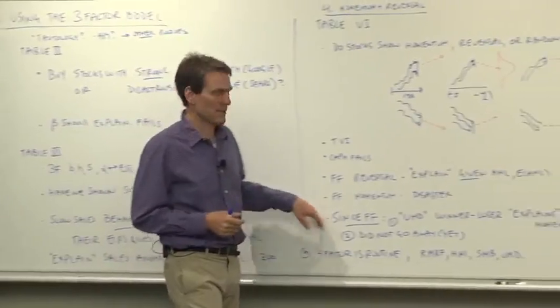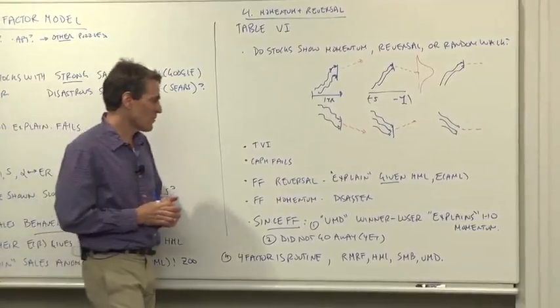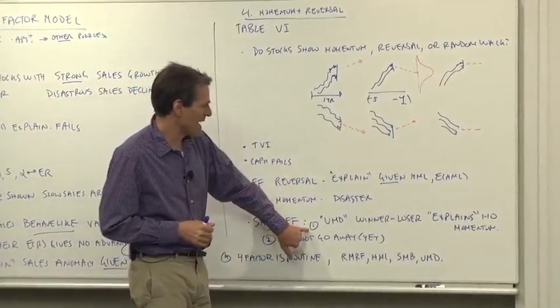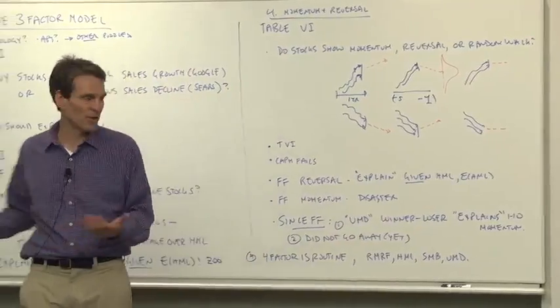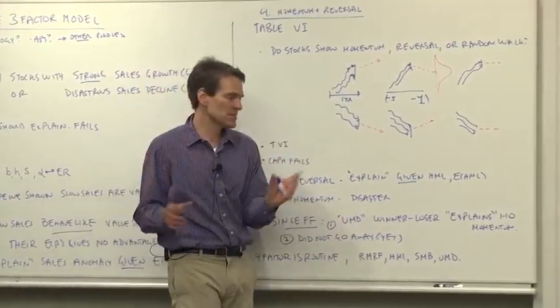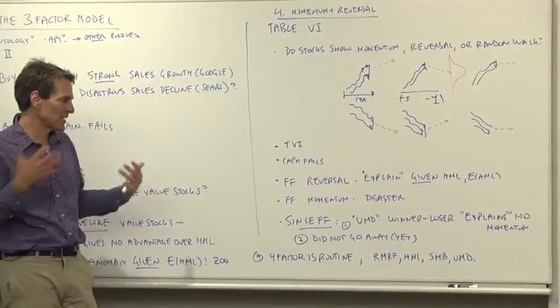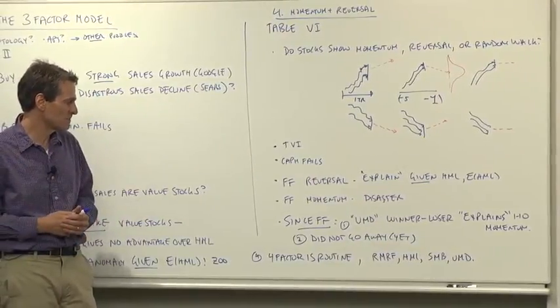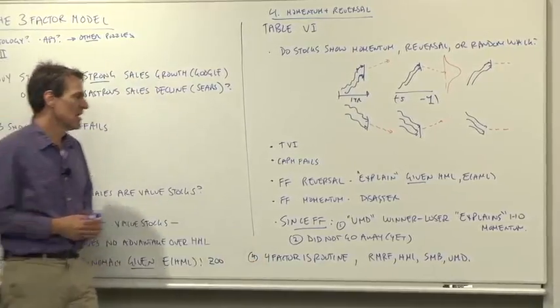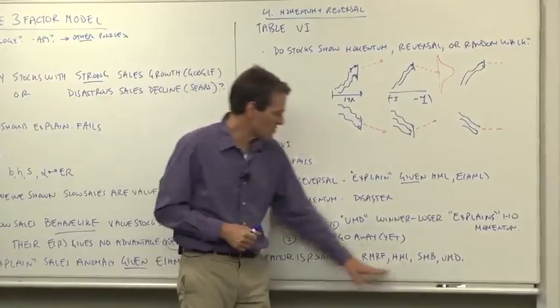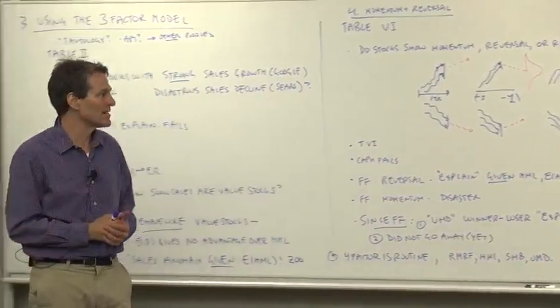What's happened since Fama-French? I think at the time they thought momentum might go away. It hasn't gone away. You can probably guess what would happen if we add a, it's called UMD, a winner minus loser portfolio, and use that as a big factor to explain the 1 to 10 momentum portfolios. It works beautifully just as HML explains the 1 to 10 value portfolios. For that reason, in routine work-a-day risk adjustments these days, the four-factor model is used quite often. RMRF, HML, SMB, and a momentum portfolio, a big winner minus loser portfolio.